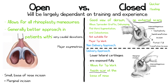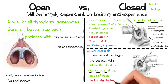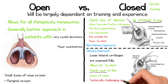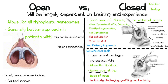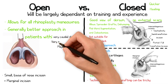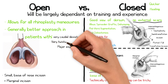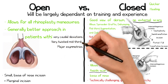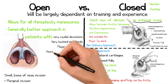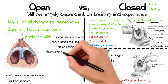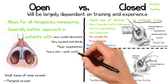However, particularly in delivery surgery, it is more technically challenging and grafting can be more tricky. In patients with very twisted mid-thirds, large tip asymmetries, heavy thick skin, and weak underlying cartilage, a closed approach may not be most suitable.